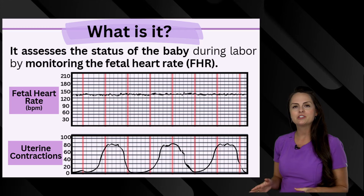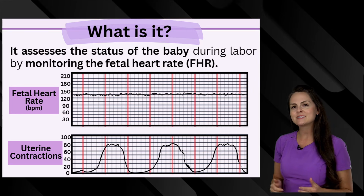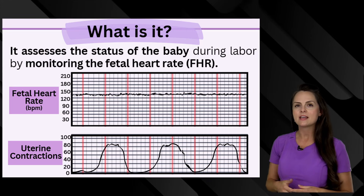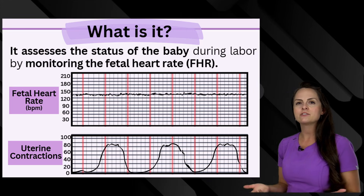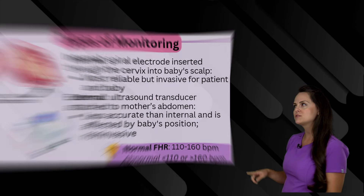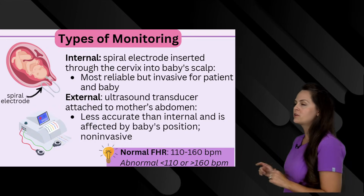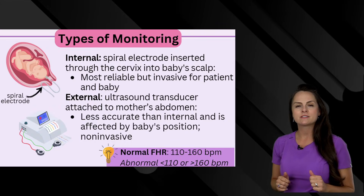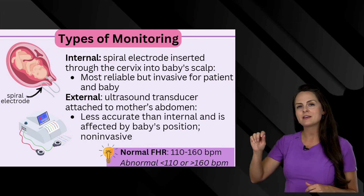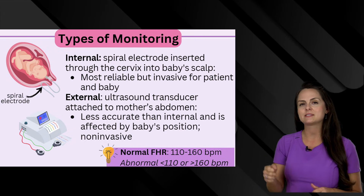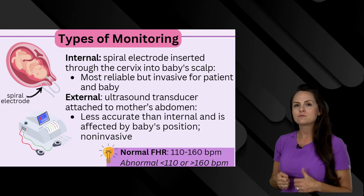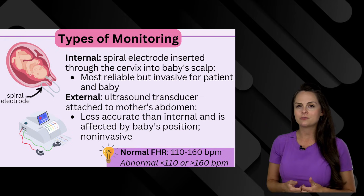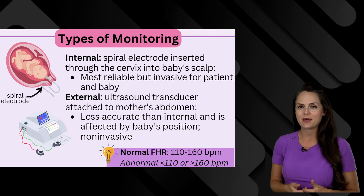Fetal heart tone monitoring is used to help us assess a baby's status during the labor process, and we can measure it various ways. One way is through internal monitoring, where a spiral electrode is inserted up through the cervix and put in the baby's scalp. This is really reliable, but it's invasive to the baby and the patient.